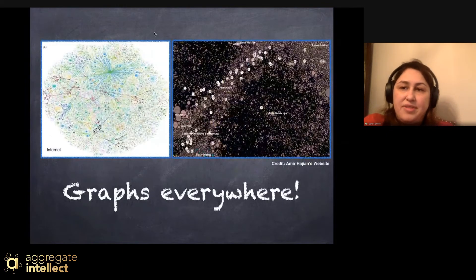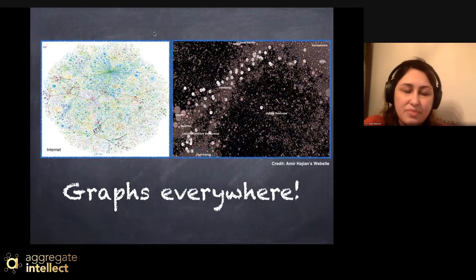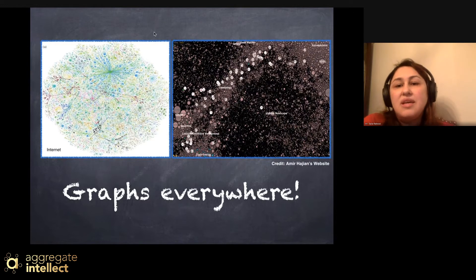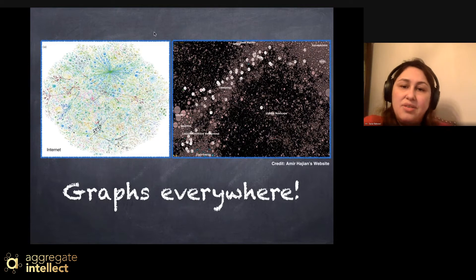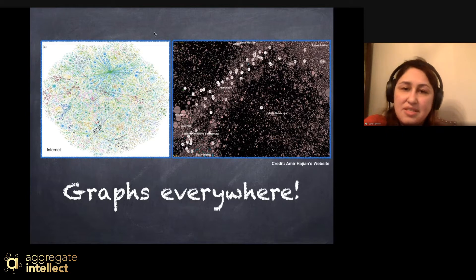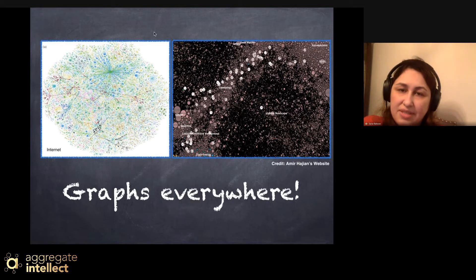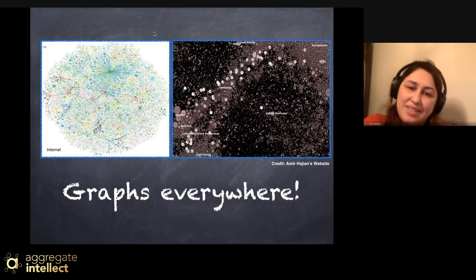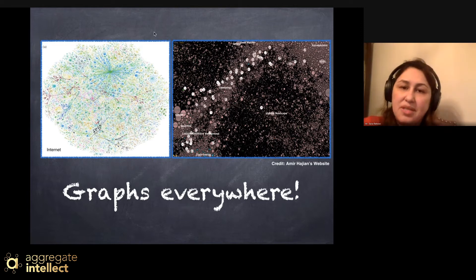Graphs are everywhere. From the internet, you can create a graph of all connectivity through the internet, to cybersecurity fraud. You can find graphs in citation relations, in healthcare systems. You can literally represent everything — anything that is somehow connected, like social networks — all of them can be represented through a graph.